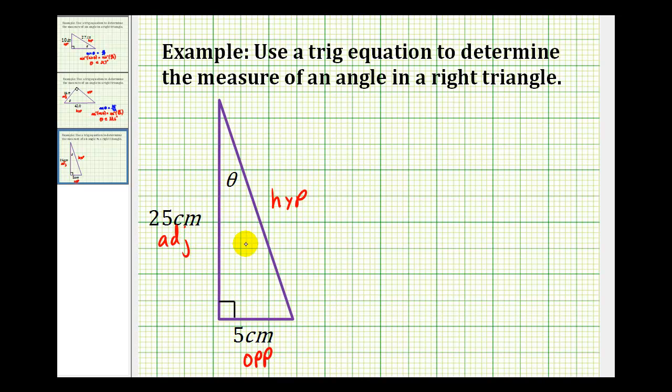So now we need a trig equation that involves the opposite side and the adjacent side, and that's going to be the tangent function. Tangent theta would equal five divided by twenty-five.